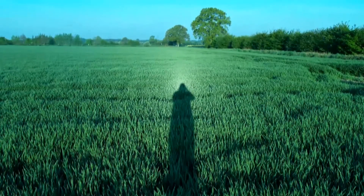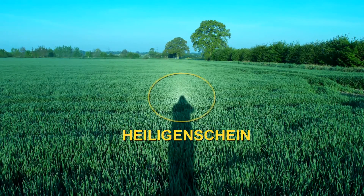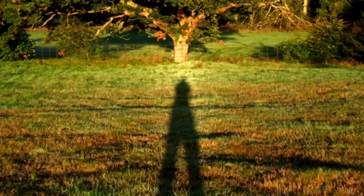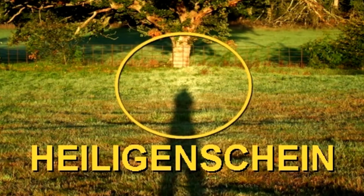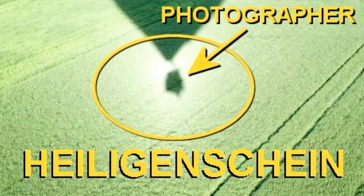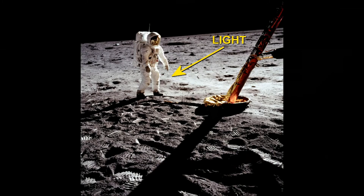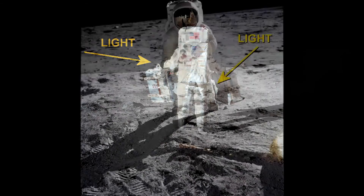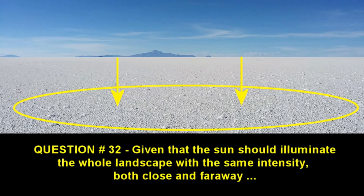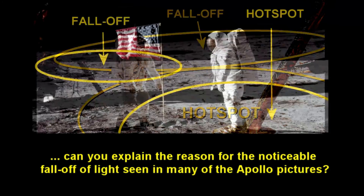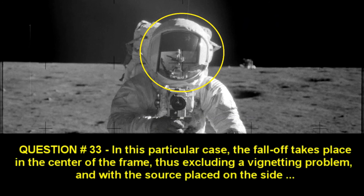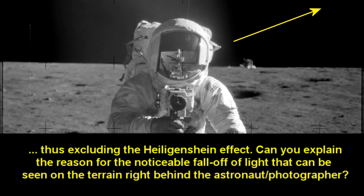Finally, as a possible explanation, a phenomenon called Heiligenschein has been suggested — referring to that peculiar halo of light that sometimes appears around the shadow of the photographer in certain situations. But the Heiligenschein effect only occurs when the sun is located exactly behind the photographer's head along with the axis of the lens. This is the reason why the halo effect, due to a retro-reflection phenomenon on the ground, appears all around its shadow. As we have seen instead, many of the hot spots in the NASA pictures occur when the light source is placed on the side of the photographer and not behind his head. Given that the sun should illuminate the whole landscape with the same intensity both close and far away, can you explain the reason for the noticeable fall-off of light seen in many of the Apollo pictures? In this particular case, the fall-off takes place in the center of the frame, thus excluding a vignetting problem, and with the source placed on the side, thus excluding the Heiligenschein effect.